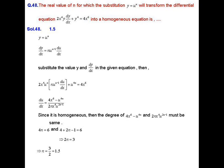Since y equals u^n and u depends on x, dy/dx equals n·u^(n−1) du/dx. Substituting the values of y and dy/dx into the given differential equation, we get 2x⁴ · u^n · u^(n−1) du/dx plus u^(4n) equals 4x⁶.